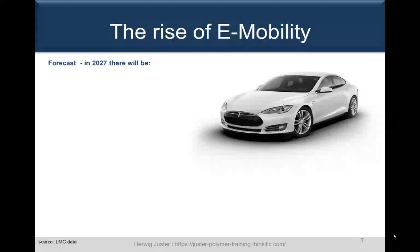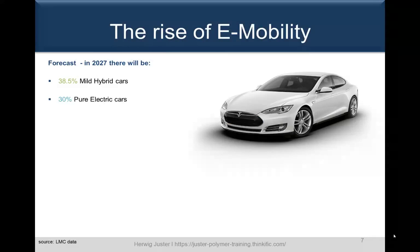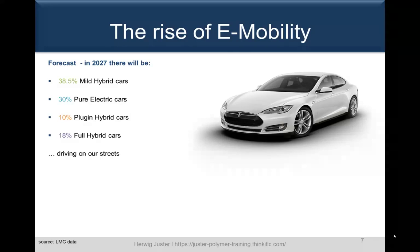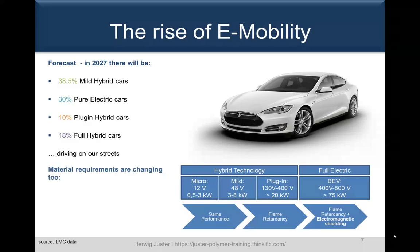We also have the rise of electrical mobility. Looking at the forecast, in 2027 there will be around 35% mild hybrid cars, followed by 30% pure electric cars, 10% plug-in hybrid cars, and 18% full hybrid cars on our streets — together with internal combustion engine cars. This rise of electrification also leads to a change in the material requirements of plastic compounds.